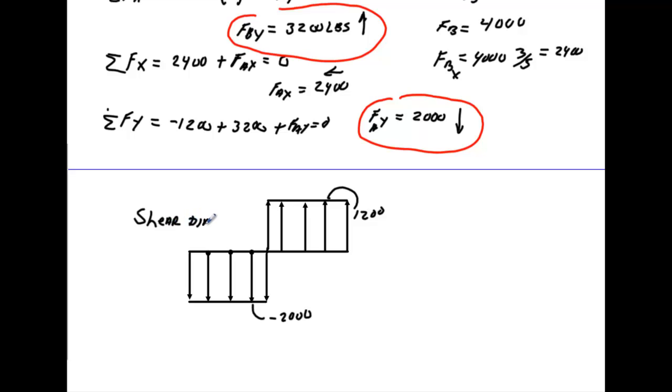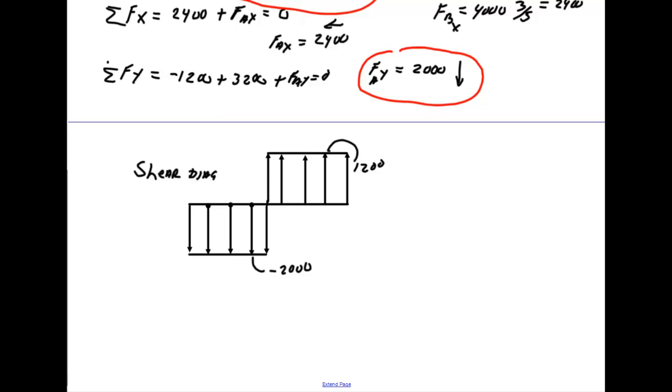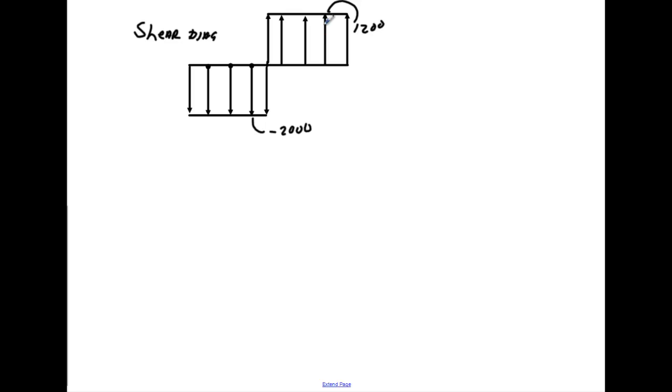Okay, the moment diagram is pretty easy. Usually you just drop it down and look directly below. So I'll just draw a line straight down to here, I'll draw a line straight down to here. Again, these are just guidelines, you don't necessarily have to do this.